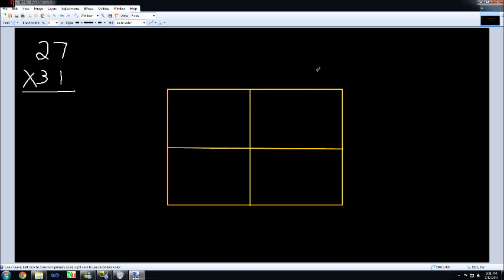The first number, 27, will be written in expanded notation, so I'm going to go ahead and write 20 and 7. The next number is 31, so I'm going to write in expanded notation 30 plus 1.